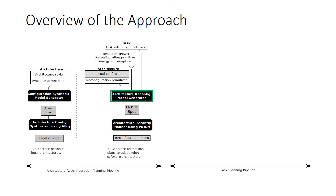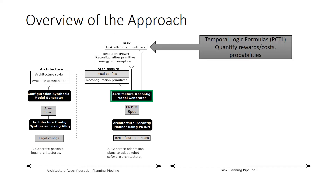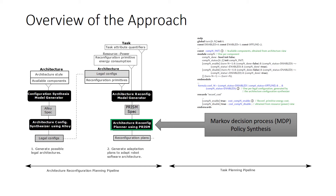The second stage in the architecture reconfiguration pipeline generates reconfiguration plans to adapt the robot's software architecture. The architecture reconfiguration model generator receives the set of legal configurations from the previous stage and the set of reconfiguration primitives from the architecture model, along with predicted energy consumption from the resource model. From the task model, it receives task attribute quantifiers — encoded as temporal logic formulas — that enable PRISM to quantify non-functional aspects such as overall energy consumed or probability of collisions. The model generator produces a specification used by the architectural reconfiguration planner to synthesize reconfiguration plans via PRISM's MDP policy synthesis capabilities.